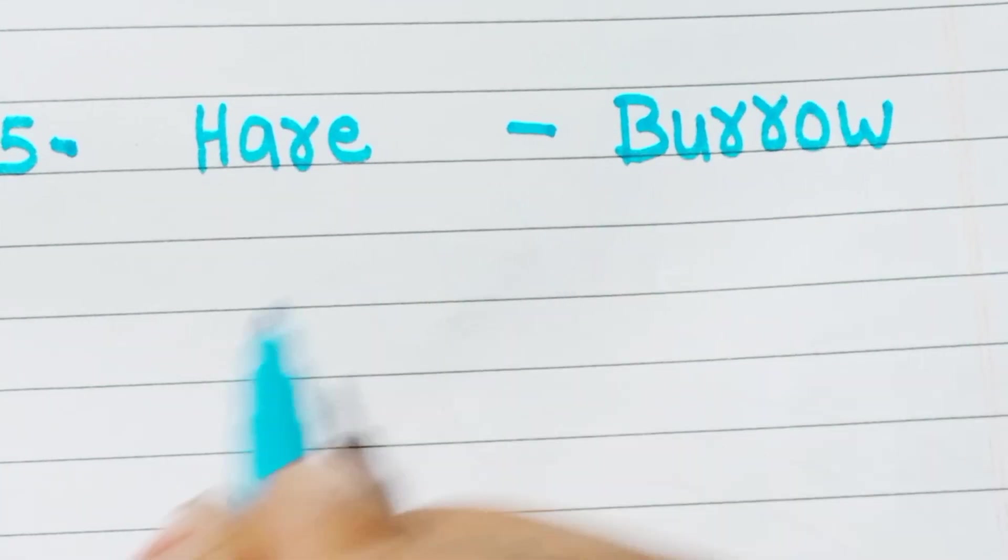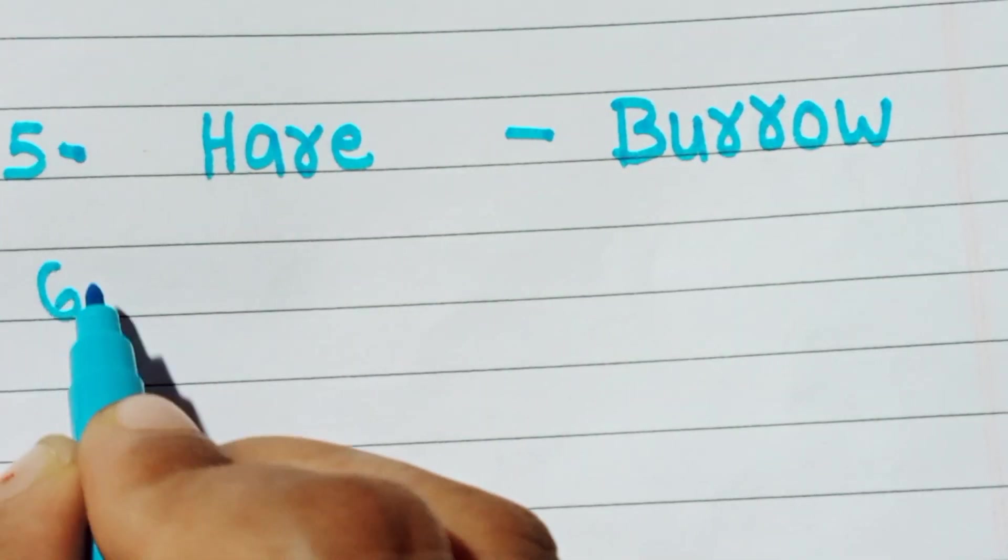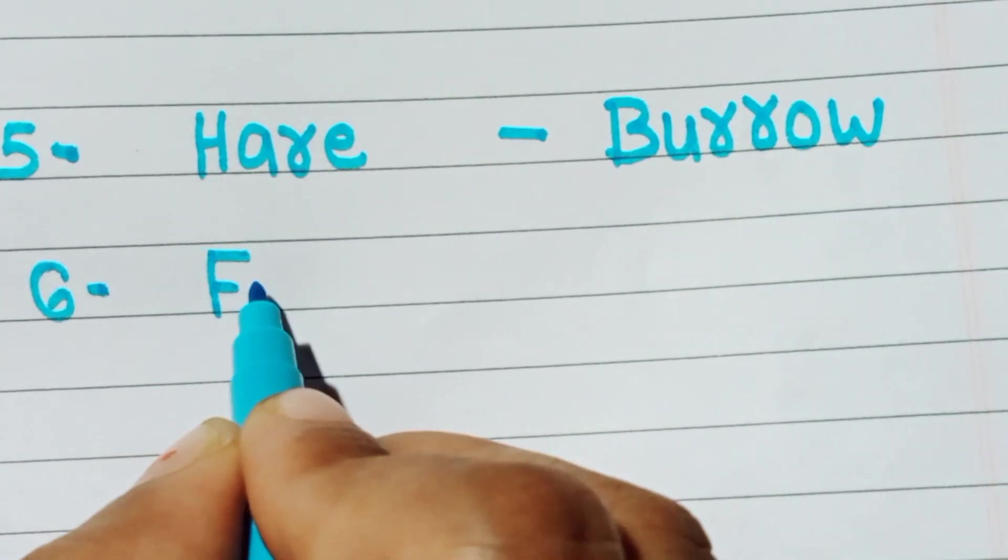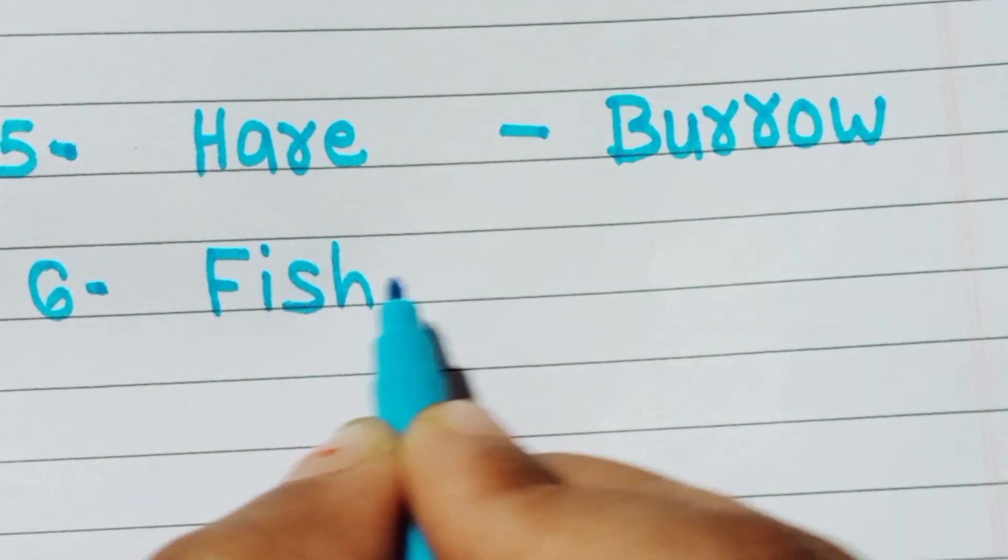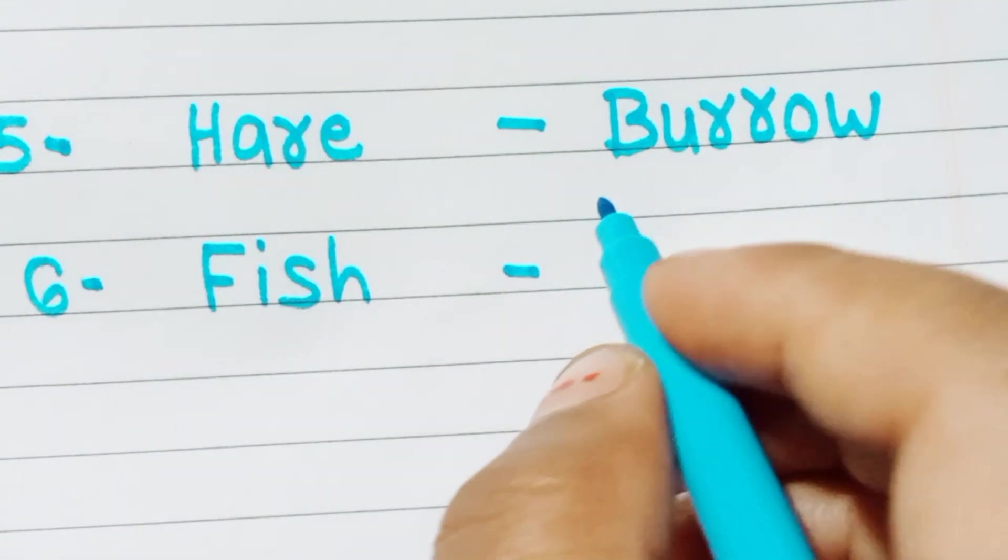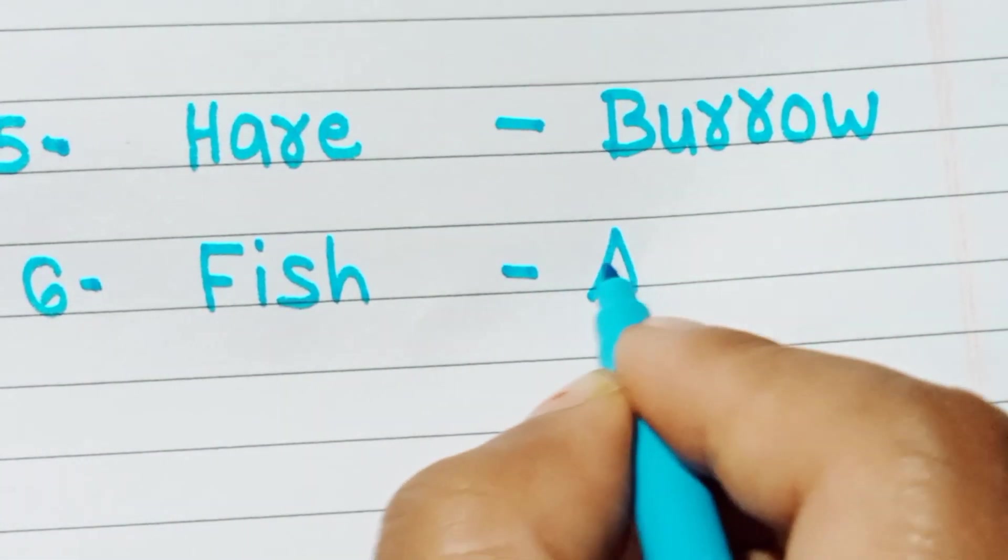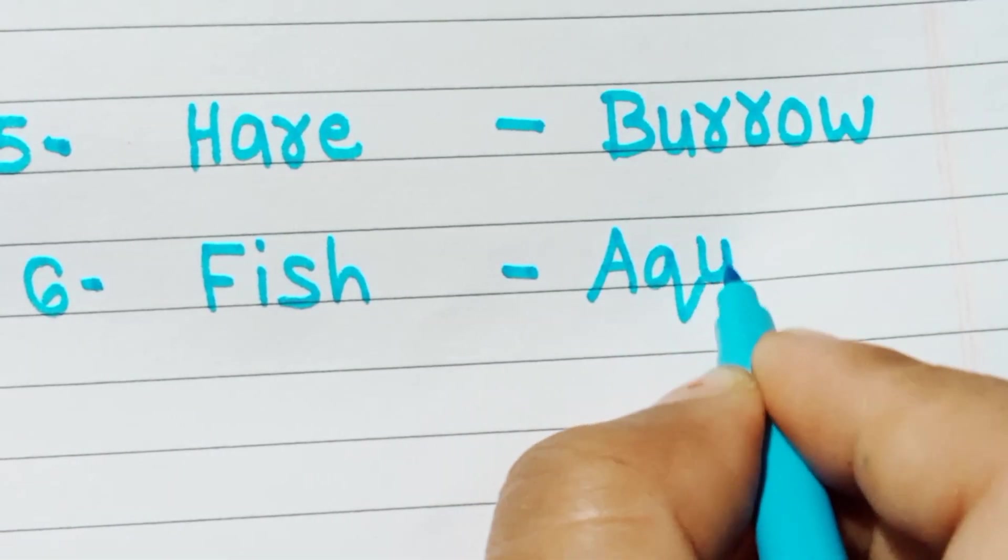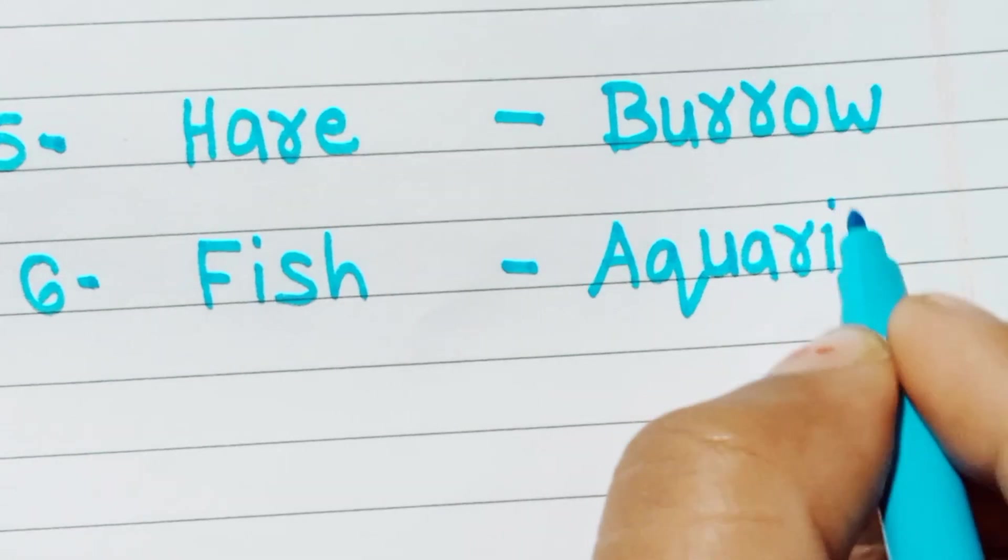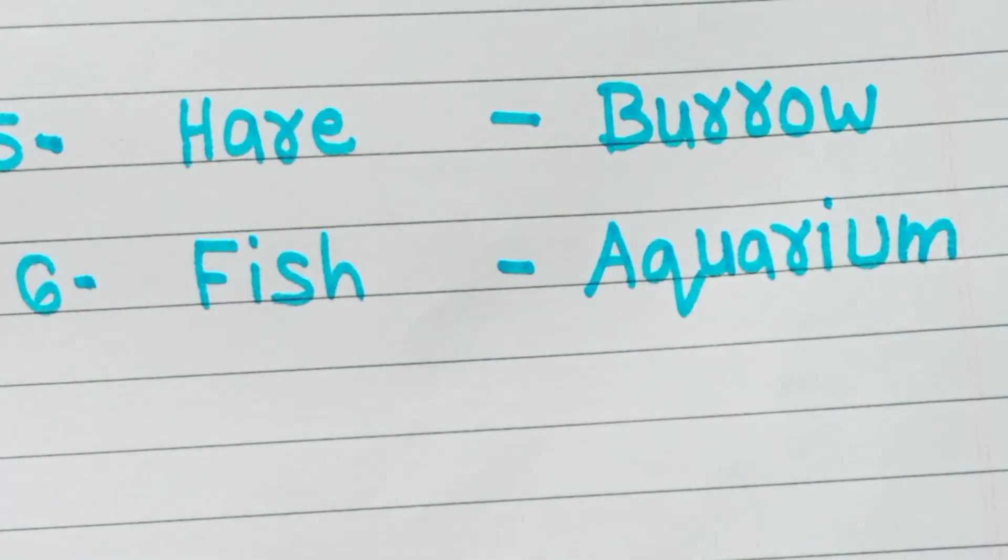Sixth number is fish, f i s h. Fish home name is aquarium, a q u a r i u m.